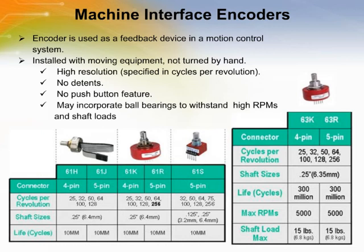Machine interface encoders may be built with ball bearings to withstand high shaft RPMs and high shaft loads. Typical applications include motor shafts, conveyor belts, machine tools, robots, factory automation, office printer and copier mechanisms, antennas and telescopes, elevators, printing equipment, and smart card fabricating equipment.